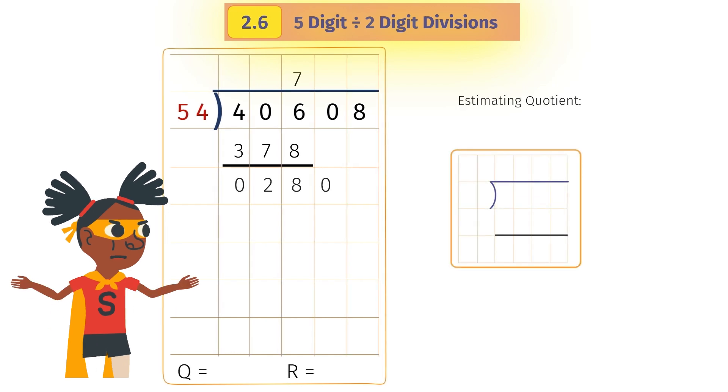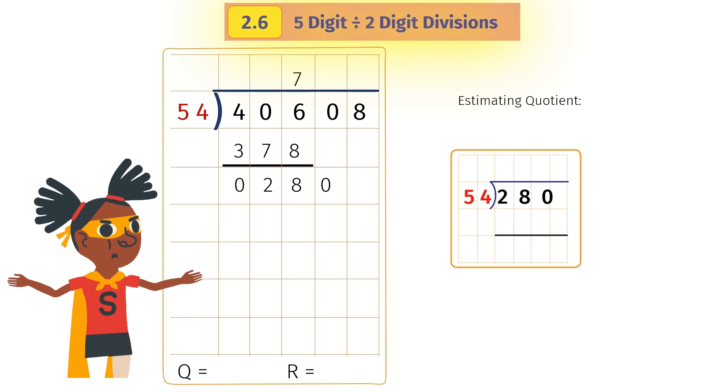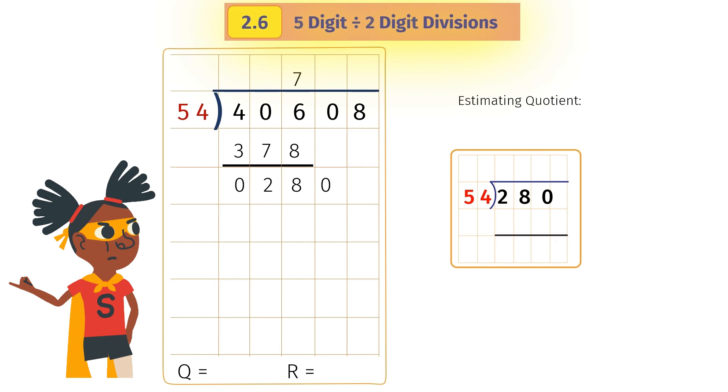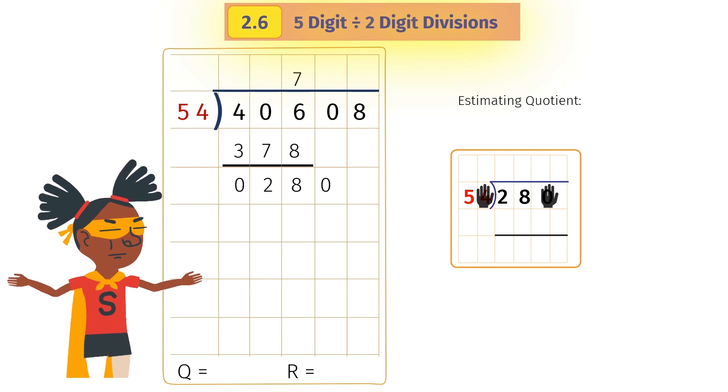We follow the same process. We hide the last digit of both dividend and divisor, 280 and 54, to get 28 divided by 5. So our estimate is 5.